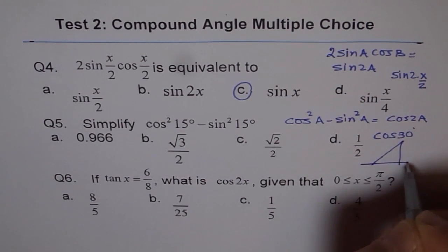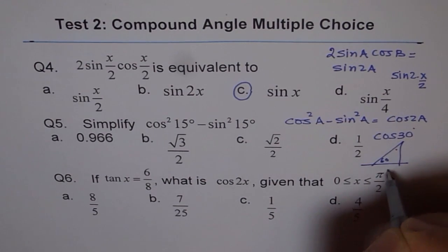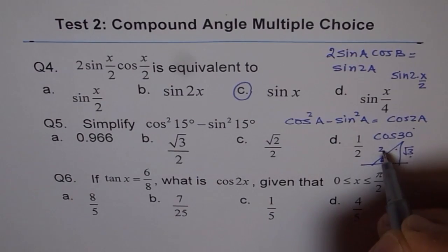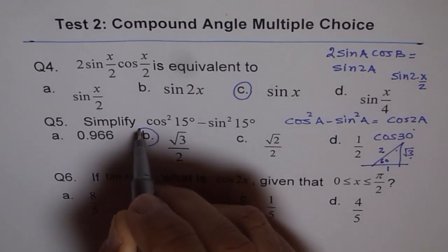We can make a triangle here. This is 60, this is 30. For 30 degrees, the sides are: it is in quadrant 1, 30 degrees positive, √3/2. So that is the choice, choice b.